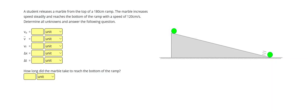A student releases a marble at the top of a 180 centimeter ramp. The marble increases speed steadily and reaches the bottom of the ramp with a speed of 120 centimeters per second. Determine all unknowns and answer the following questions.